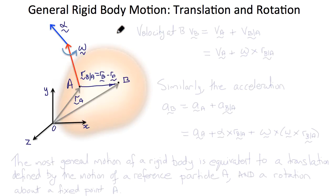So the velocity at point B, V sub B, equals V sub A plus the velocity of B relative to A, which equals V sub A plus omega cross R of B relative to A, so the rotation about A.